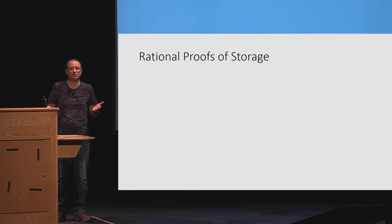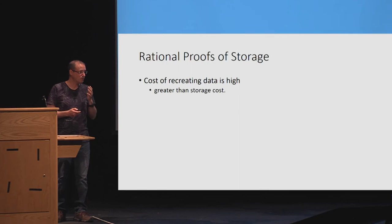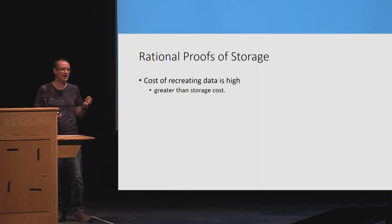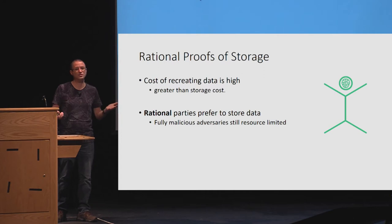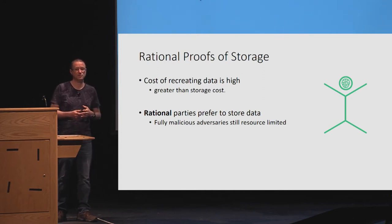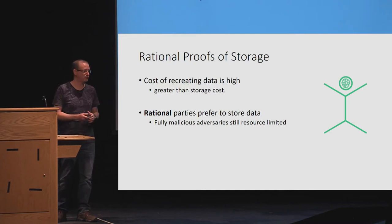Why is this OR statement still good — why can we still use this as a proof of resource consumption? The idea is that the cost of recreating the data is going to be high, and in particular it's going to be more than the cost of just storing the data. If that's the case, then rational parties would rather store the data than recreate it. So in the context of cryptocurrencies, this is definitely good enough, because rational parties will store the data and the polar bears will be happy.